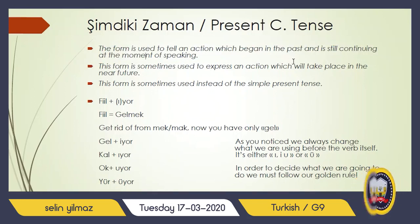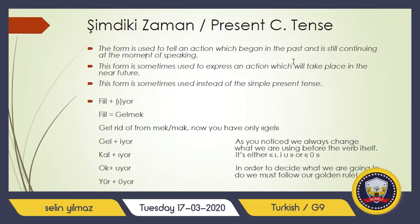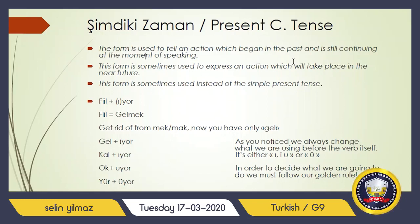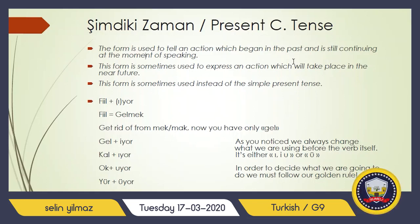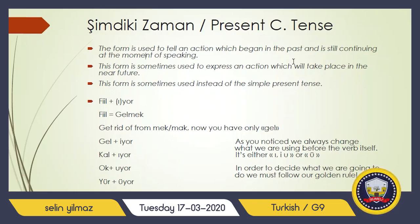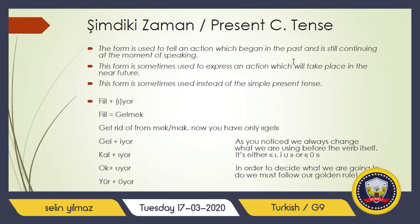How are you going to form şimdiki zaman? It's not a big deal. Every verb in English has 'to' before it — like to come, to swim, to sleep, to eat. Before we conjugate, we get rid of 'to.' The same logic applies here: 'mek' and 'to' are the same. For example, 'gelmek' — you get rid of 'mek' and you are left with 'gel.' Bye bye, mek.